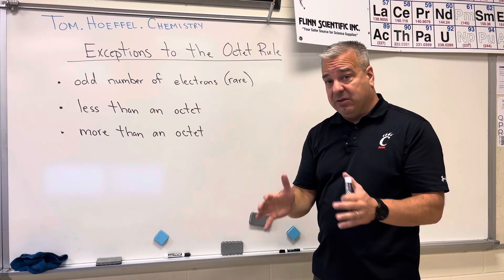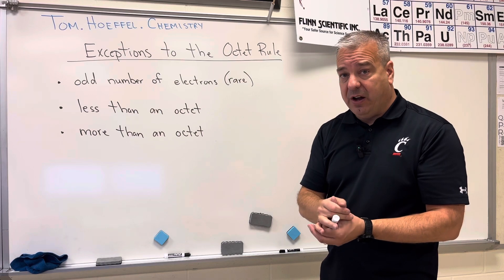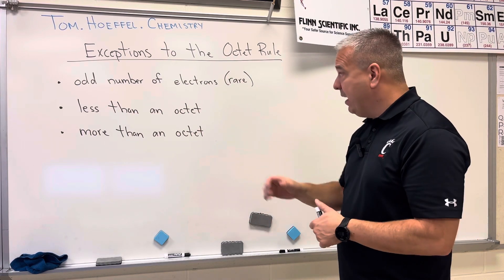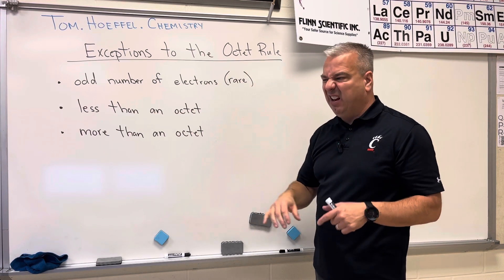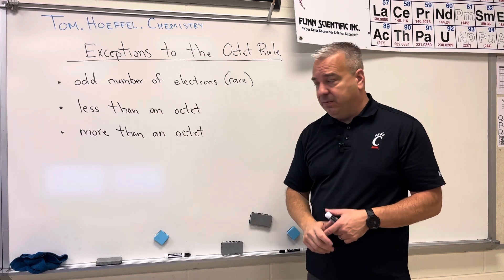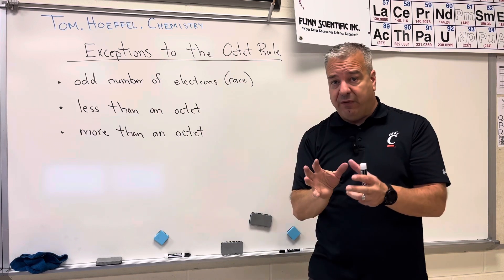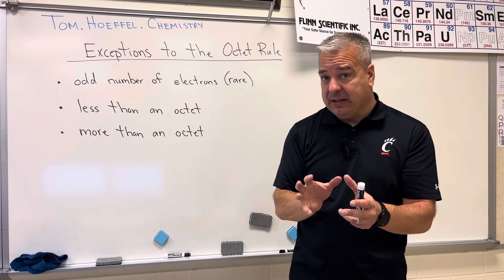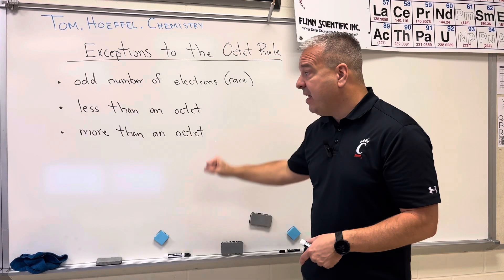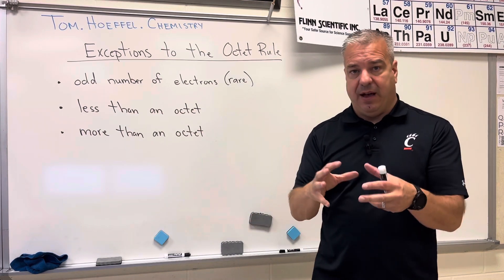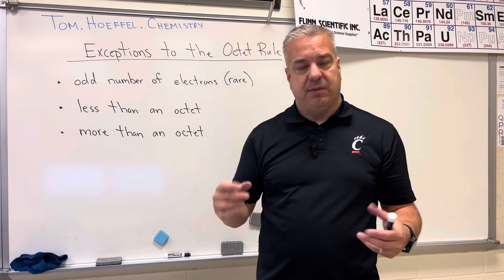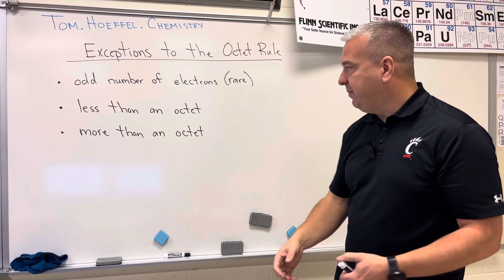I tell my students: if you ever total up the electrons and you get an odd number of valence electrons, you're probably missing something — go ahead and double check, because we don't do these types of problems in an introductory class. The other two categories we do cover: we can have less than an octet, where a valence shell has fewer than eight electrons, and we can have more than an octet, where an atom has more than eight electrons.